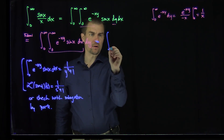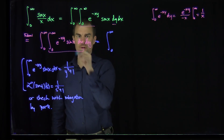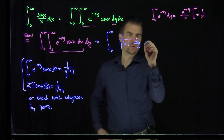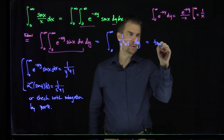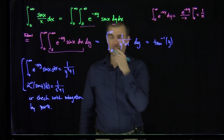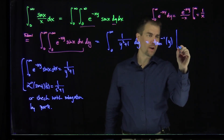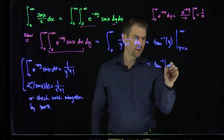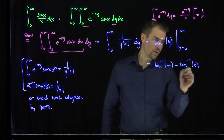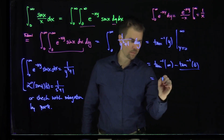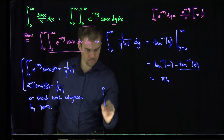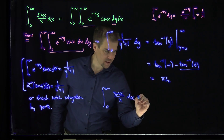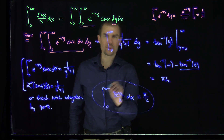So this turns into the integral from zero to infinity of one over y squared plus one dy, and this is just the arctangent of y evaluated from y equals zero to infinity. We get the arctangent of infinity minus the arctangent of zero. That is pi over two minus zero. So we've just shown that the integral from zero to infinity of sine of x over x dx is equal to pi over two.